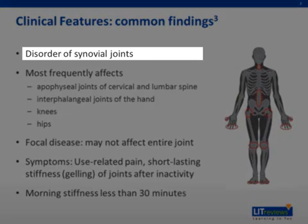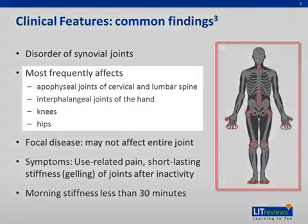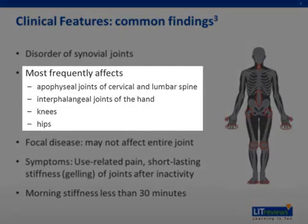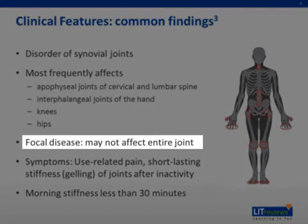Osteoarthritis is a disorder of the synovial joints. As shown in the figure, these joints include the apophysial joints of the cervical and lumbar spine, interphalangeal joints of the hands, the knees, and the hips. The disease is often focal and may not affect the entire joint — for example, only the medial compartment of the knee joint.